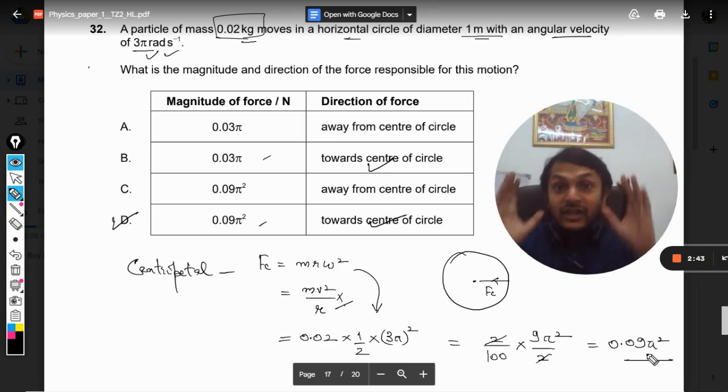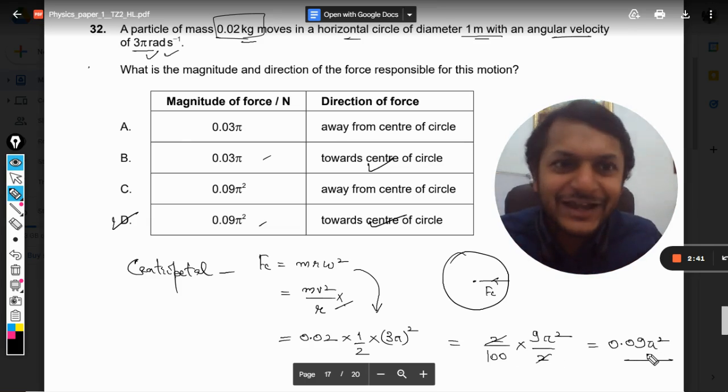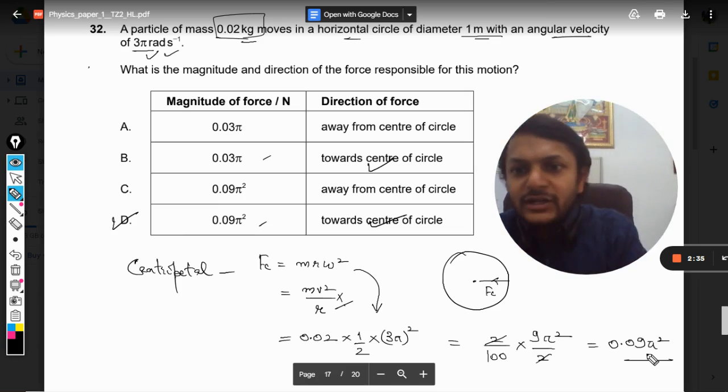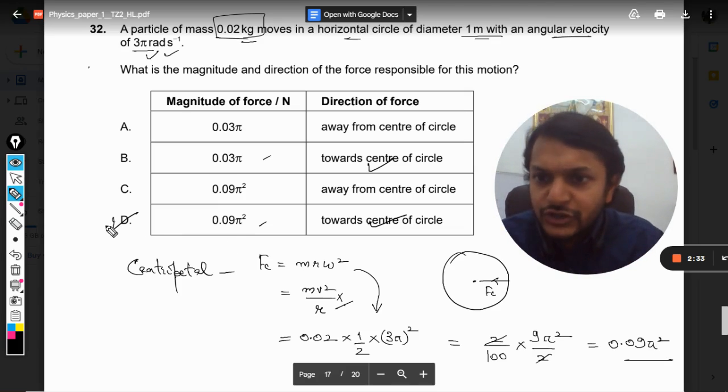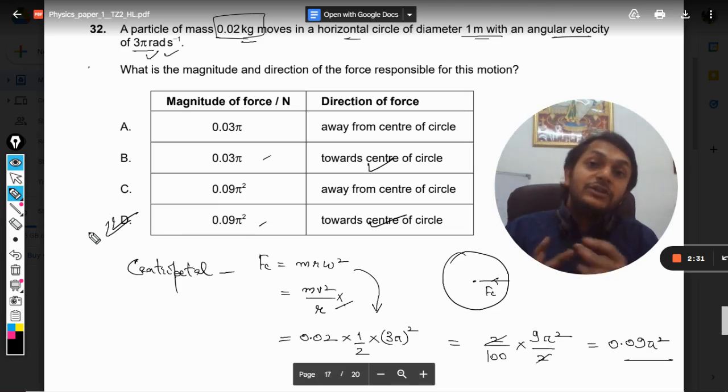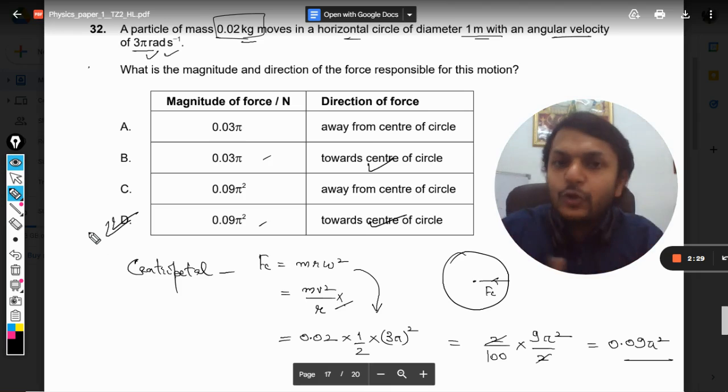I was really confused, I'm really sorry for that because I just took it for the radius but it is diameter. Diameter is 1 meter, so this is how we do it and we find the centripetal force. So answer will be D because I was not able to calculate the correct answer even then I was able to click D. Why? Because I know that pi square will be there, so it had to be D.